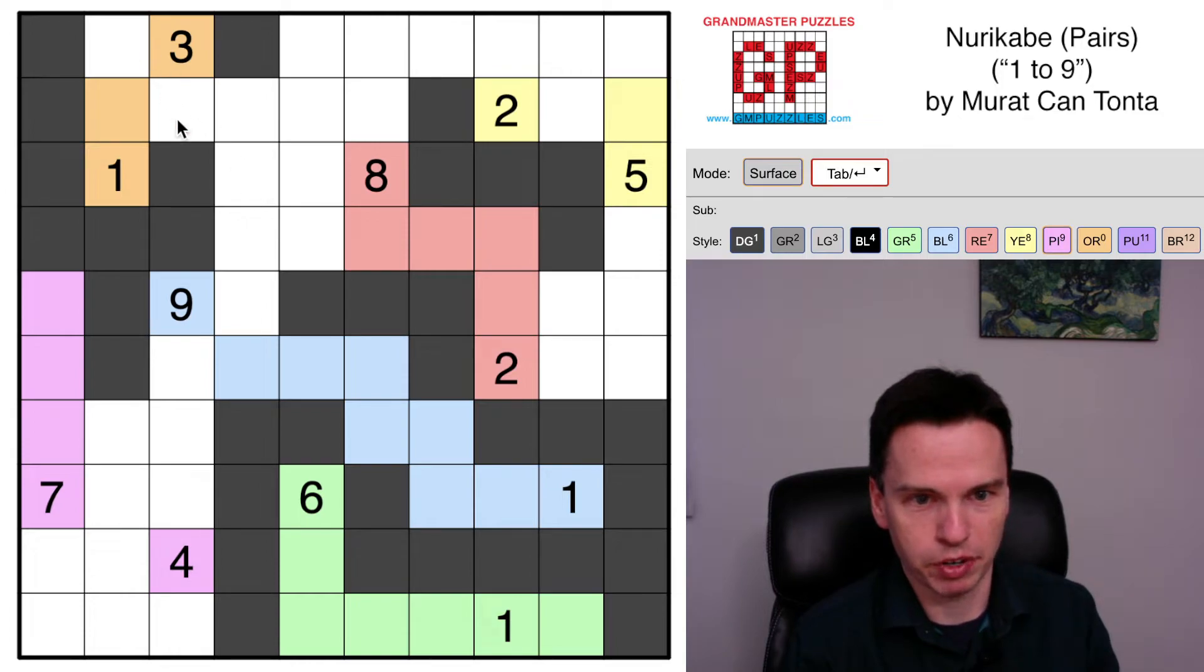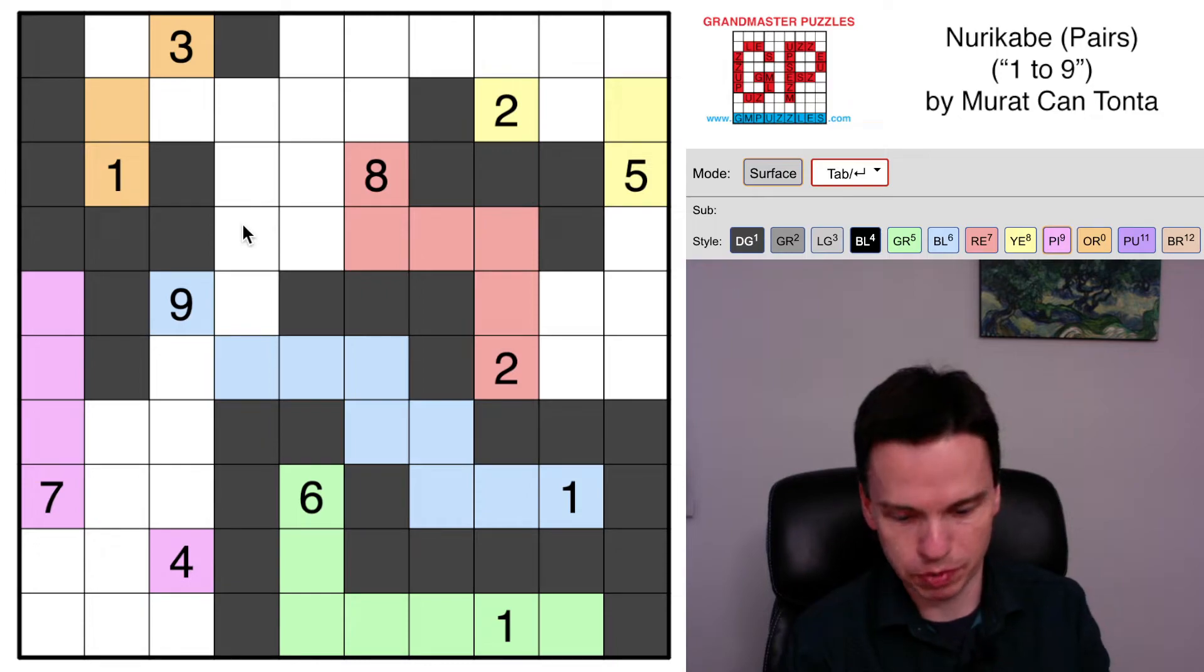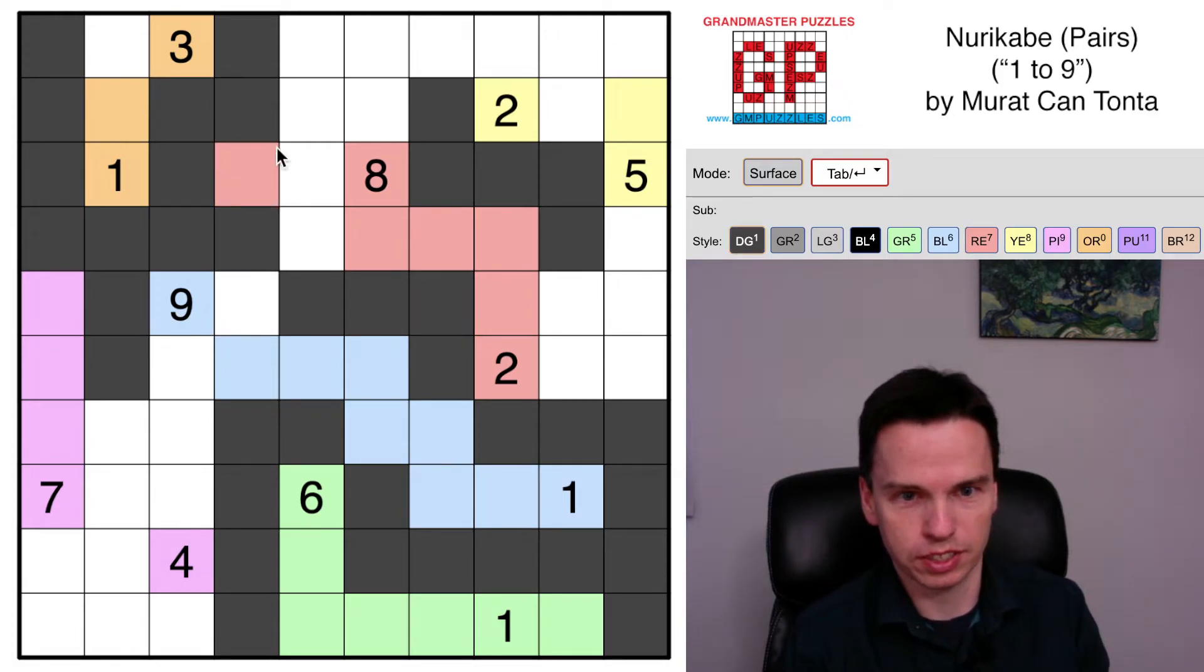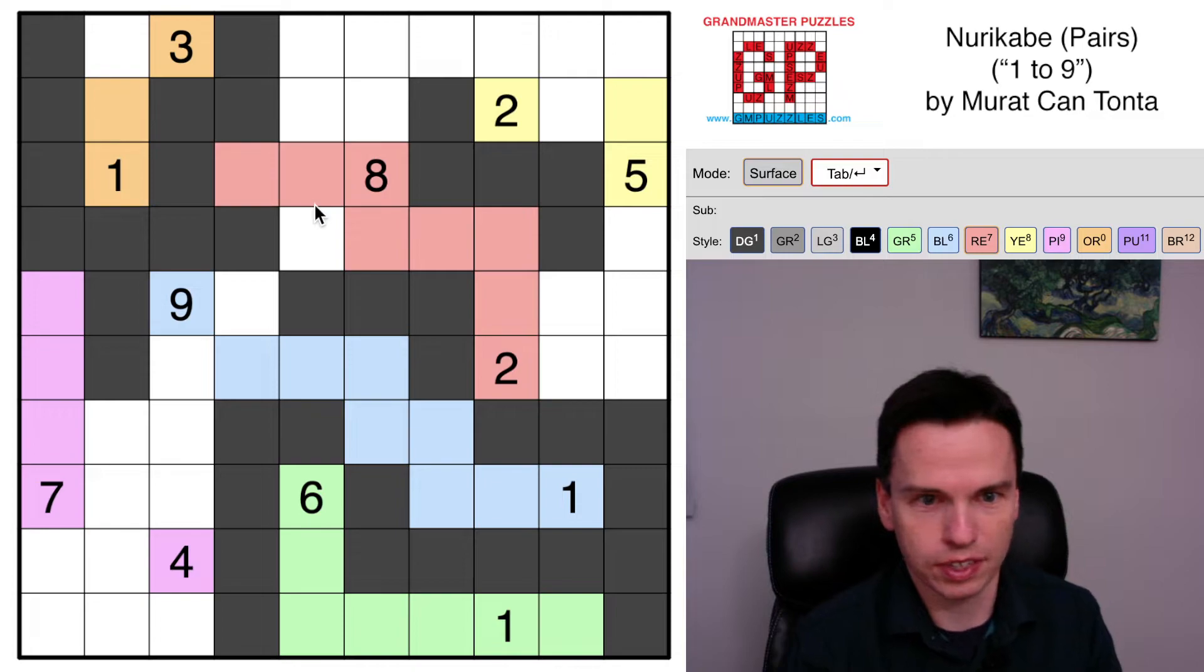Here's a 2x2 setup. It can't be part of orange or part of blue because they only have one more cell left in these sort of spaces, so it must be red. If it were part of this red group, it would isolate this ocean when it connects, so it's got to be here. And that marks this in, ocean connectivity marks these in, puts this cell in.